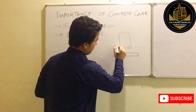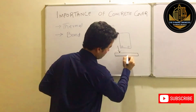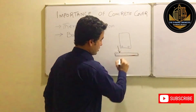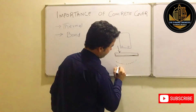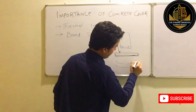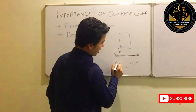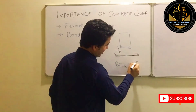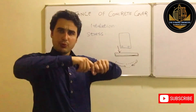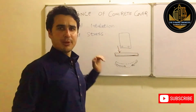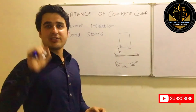Looking at the deflected shape of the beam under load, you can see that the bar will try to move toward one side and pull out from the other — the bar essentially tries to pull itself out of the member. To stop this pull-out, the concrete tensile strength is needed.